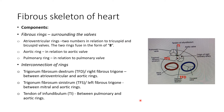What are the components of this fibrous skeleton of the heart? There are fibrous rings surrounding the valves. The atrioventricular rings are two in number, in relation to the tricuspid and bicuspid valves. These two rings fuse and form a figure-of-eight shape. There is also the aortic ring in relation to the aortic valve, and the pulmonary ring in relation to the pulmonary valve.